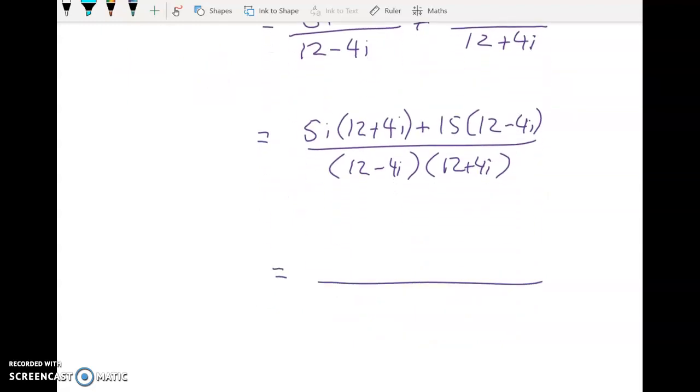Right, so denominator, what have I got? Well, I've got 12 squared, so 144 plus 16. So that's going to be 160.